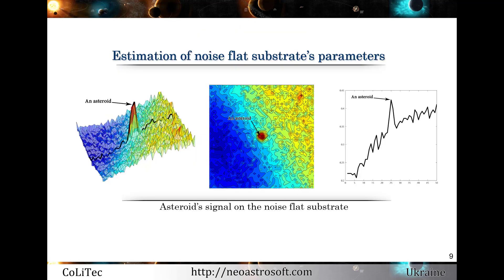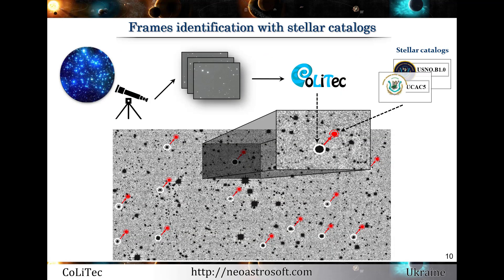For astrometric reduction, we first need to recognize pixels related only to the real object signal. Then the software removes all unnecessary pixels from the input dataset to reduce the amount of measurements for processing. After estimation of the object's position, the software starts frame identification with stellar catalogs. This is a very difficult procedure because these catalogs contain more than billions of objects with astrometric and photometric measurements. The main goal of this stage is to understand to what part of the sky these frames are related.